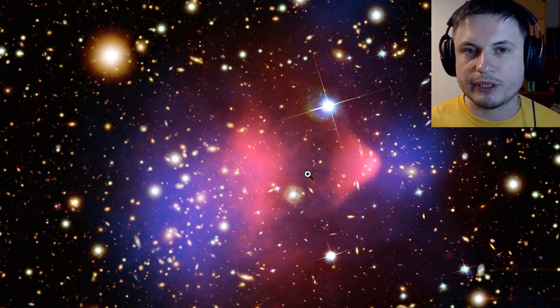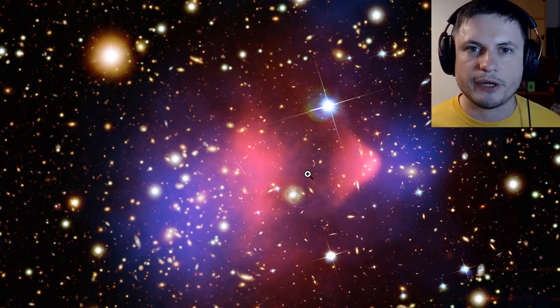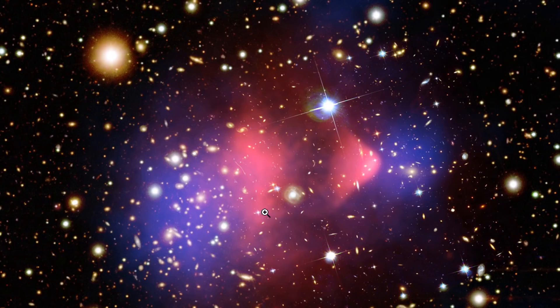The red stuff here is essentially regular matter or the effects of regular matter and the blue stuff that you see on the sides is the effect of dark matter or basically the gravitational effects of dark matter. And this is actually a visual recreation of this event.